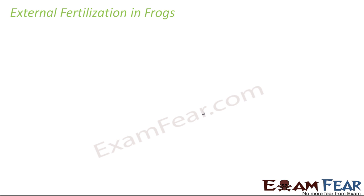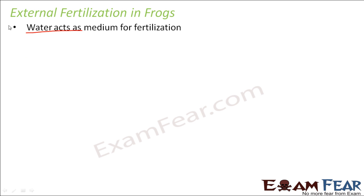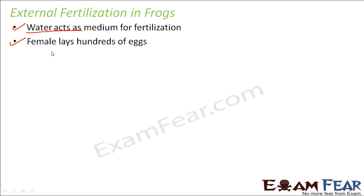In external fertilization in frogs, water acts as the medium. Frogs, toads, and fishes spend a good amount of their life in water, so water is a good medium for fertilization. The female lays hundreds of eggs. This is an important difference — in internal fertilization, for example in human beings, the number of eggs produced is very limited. A female produces only one egg per month, normally one every 28 days. But in the case of frogs, the female lays hundreds of eggs.